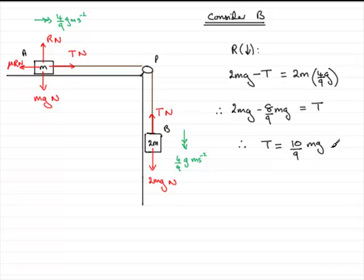And I would leave g in, since everything in the question is left with g in. So we've got the tension is 10 ninths mg, and don't forget the units, newtons. Well that brings us now to the end of the first part of this question.